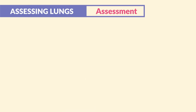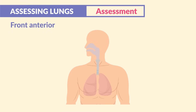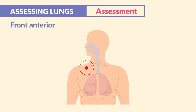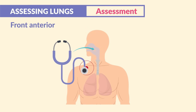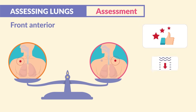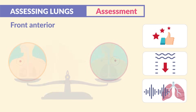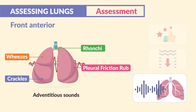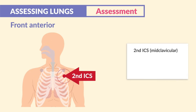Now for the assessment, we start on the front — the anterior, basically the chest. We want to start at the top, on the right side, above the clavicle, aka above the collarbone. We listen for a full inhalation and a full exhalation, then move to the opposite side. We want to compare the quality, the depth, as well as any extra sounds. These extra sounds are called adventitious breath sounds. Then we move to the second ICS — midclavicular, basically meaning the middle of the clavicle. An ICS is that intercostal space in between the ribs.